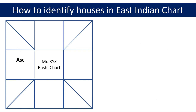Assuming the ascendant or lagna, denoted by ASC, is positioned in the square as shown on your screen, then that becomes the first house in the chart. Once you have established the first house in the chart, it is easy to identify the remaining 12 houses. If you want to know more about ascendant or lagna, I have done a separate video on it.